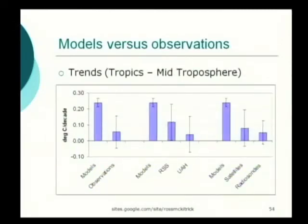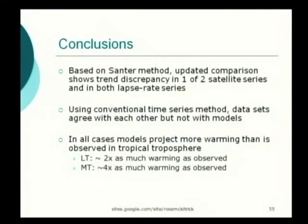Moving up to the mid-troposphere, this discrepancy widens even further — the models are up here and the data is down at about a quarter of the model trends. Even up to the end of 2009, the observational trend is insignificant in the mid-troposphere, and the difference with the models is statistically significant. Again, there's a big difference between RSS and UAH individually, but taken together the satellites and balloons tend to agree with each other. Our conclusion is that the models and the data don't agree with each other, but the different data sets by and large do agree with each other. We're back to that point raised in 2006 — this is a potentially serious inconsistency that needs to be addressed. Thank you.